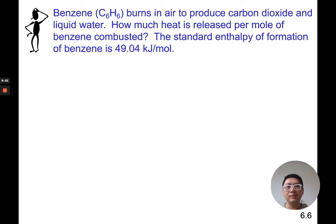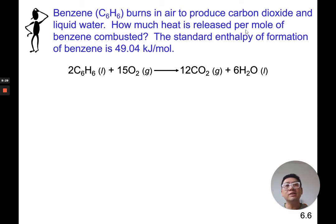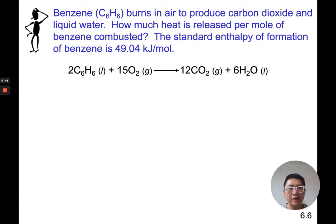Let's look at a sample problem. Benzene, C6H6, burns in air (oxygen) to produce carbon dioxide and liquid water. The balanced equation shows 2 moles of benzene and 15 moles of oxygen makes 12 moles of carbon dioxide and 6 moles of water. It's already balanced. The question: how much heat is released per mole of benzene C6H6 combusted? The standard enthalpy of formation of benzene is 49.04 kilojoules per mole. We're not given delta H of this reaction — we have to figure it out.